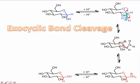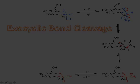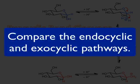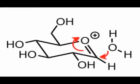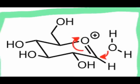Evidence for both pathways has mounted over the years. Before the end of this webcast, I'd like to ask you to compare and contrast the exocyclic and endocyclic pathways, looking for differences and potential experiments that you can use to determine exocyclic versus endocyclic ring cleavage. In the next webcast, we'll take a more detailed look at the oxocarbenium ion intermediate we saw in the exocyclic bond cleavage mechanism.